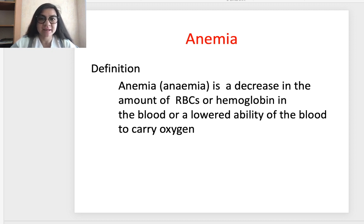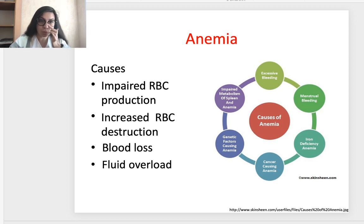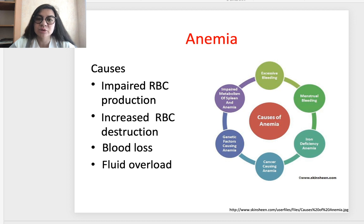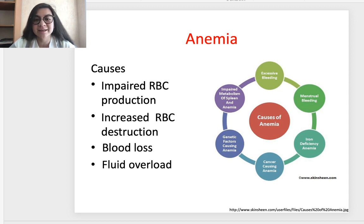What is anemia? It is a decrease in the amount of red blood cells or hemoglobin in the blood, or a lowered ability of the blood to carry oxygen. What causes can lead to anemia? It is impaired red blood cell production, increased red blood cell destruction, blood loss, or fluid overload. Common causes include excessive bleeding such as menstrual bleeding, iron deficiency, cancer, genetic factors, and impaired spleen metabolism.